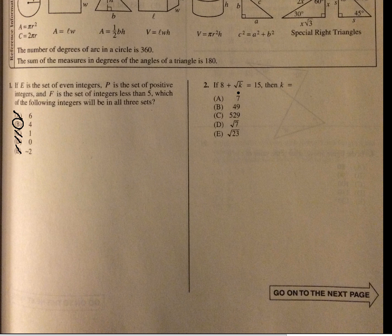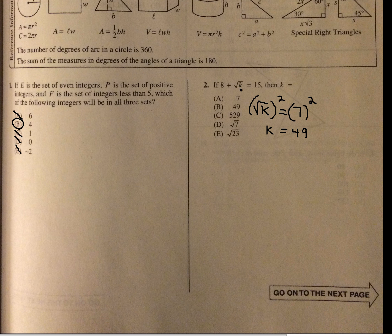8 plus the square root of k equals 15 — what is k? You can just do a simple algebra problem here. Subtract 8 from both sides, so you get the square root of k equals 7. Square both sides — that's how you release a square root — so you get k equals 49. Or you can just put numbers in: if you put 49 in and take its square root, you get 7, and then 8 plus 7 equals 15.